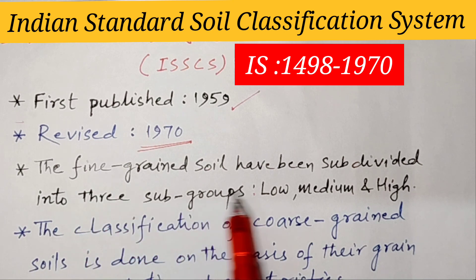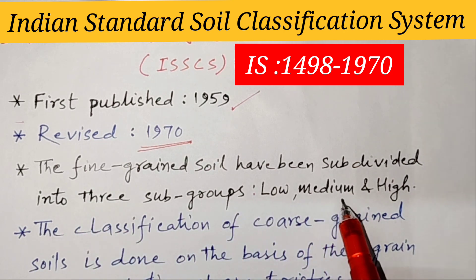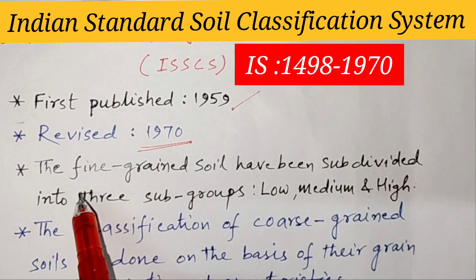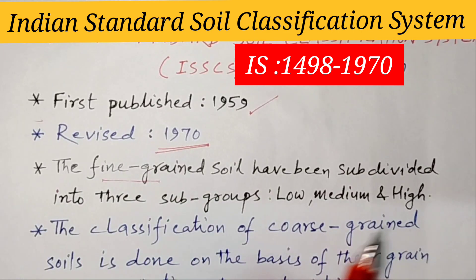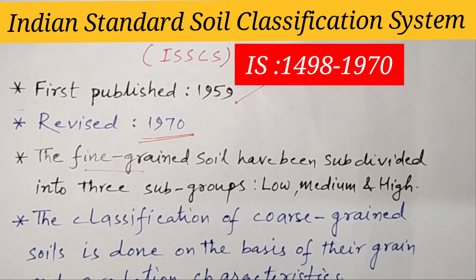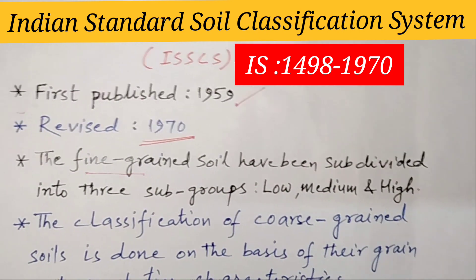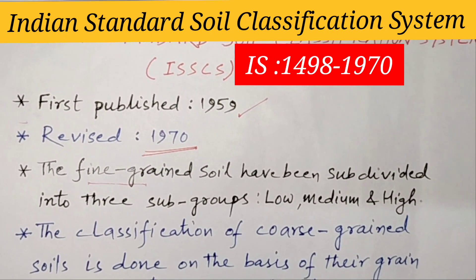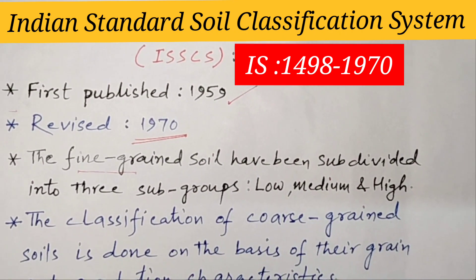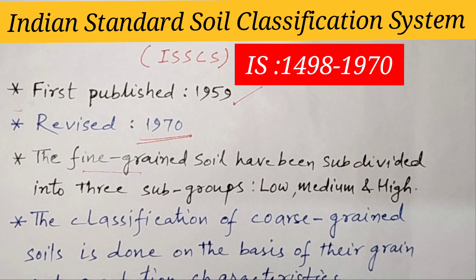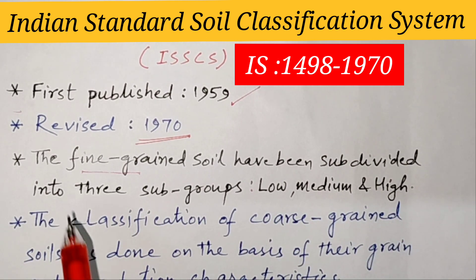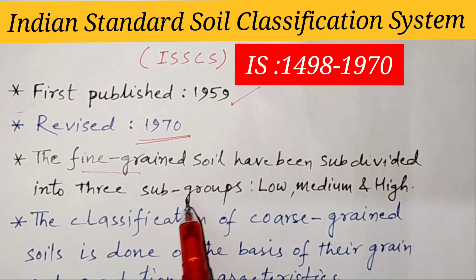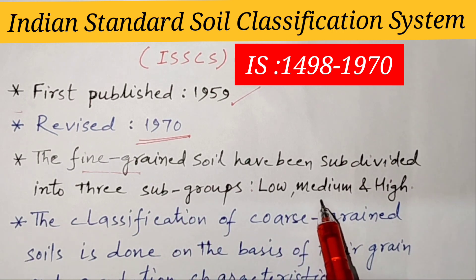The Indian Standard Classification System is essentially based on the Unified Soil Classification System, but with the same design modified so that low, medium and high compressibility are classified based on their liquid limit value. The fine-grained soils are classified on the basis of their plasticity characteristics using the Indian Standard Plasticity Chart.